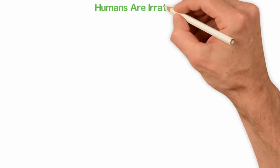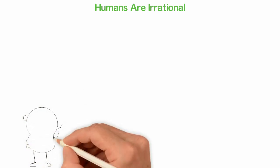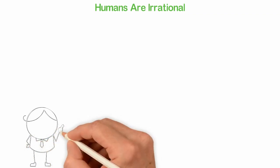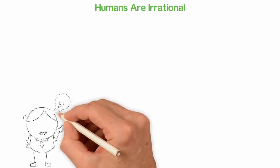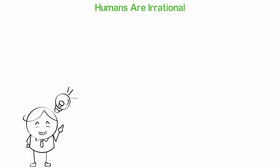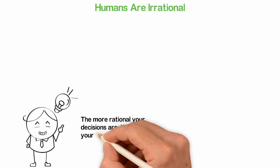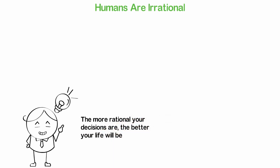Humans are irrational. You, me, everyone—we hate to admit this, but studies after studies show that we're emotional beings. We don't think as deep as we want to make ourselves believe. And if you understand this, you'll be more conscious when you make decisions, because the more rational your decisions are, the better your life will be.